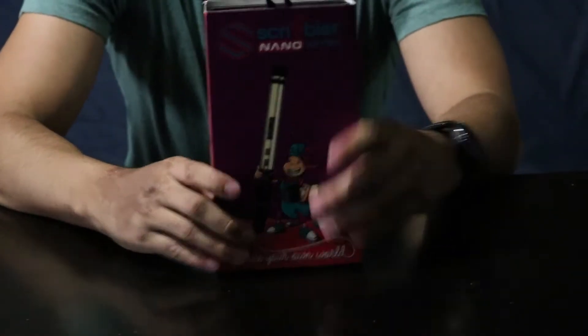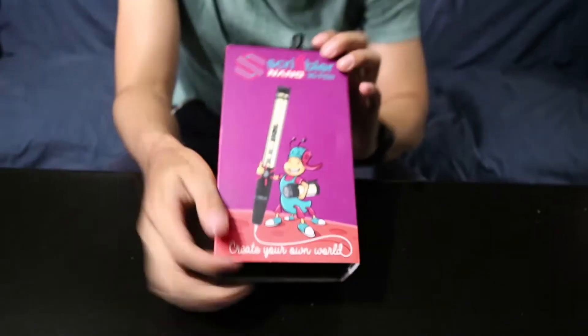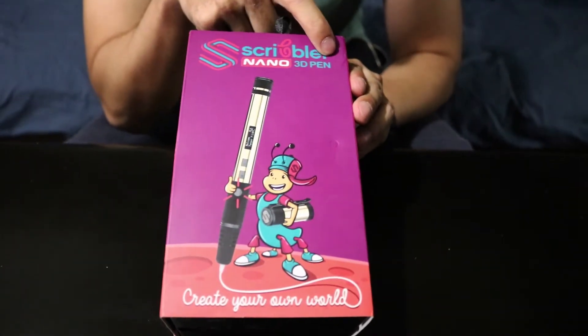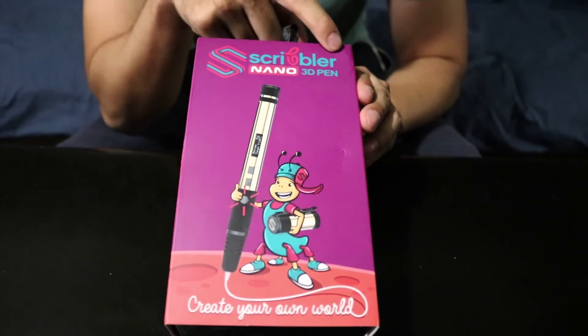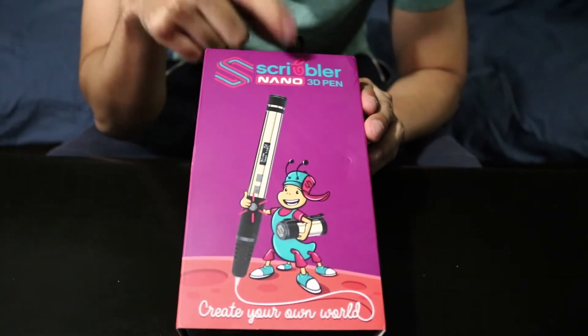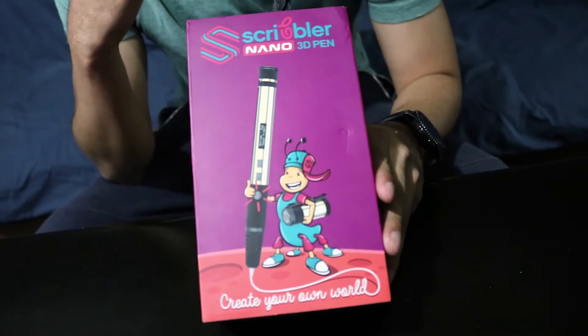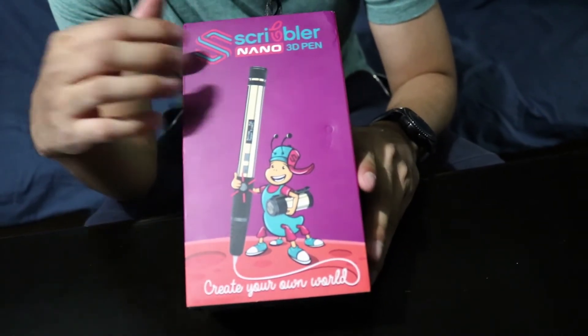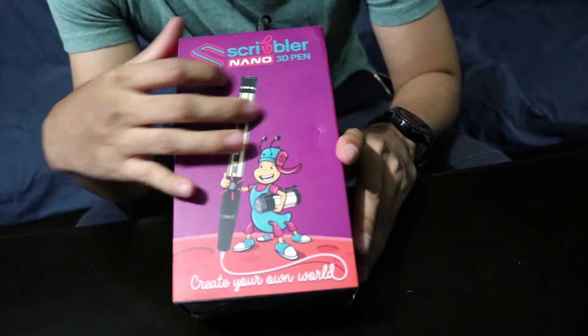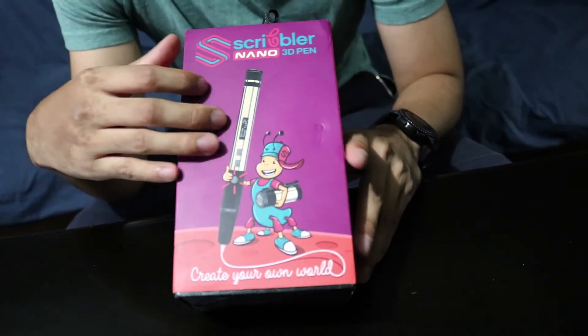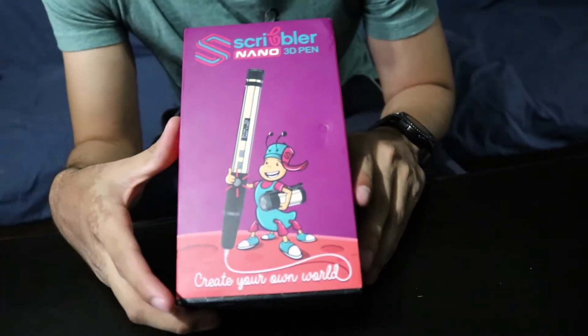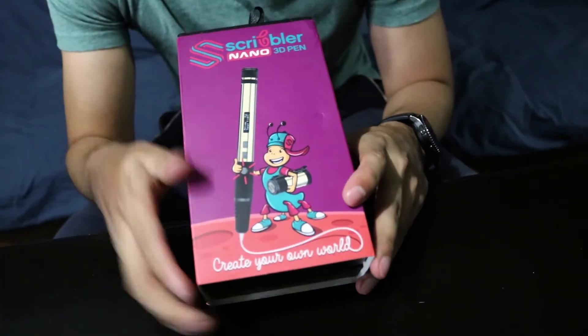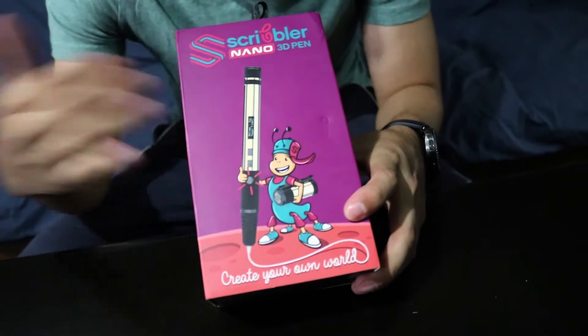So today what we have here is the Scribbler Nano 3D pen. I was looking for a 3D pen, they had the Version 3 I believe and then the Duo, and then I saw this one, the Nano. I was looking online to see if I could find any reviews or anything about this pen and I couldn't find anything, so I just decided to get this and check it out. So here I have it, the Nano.